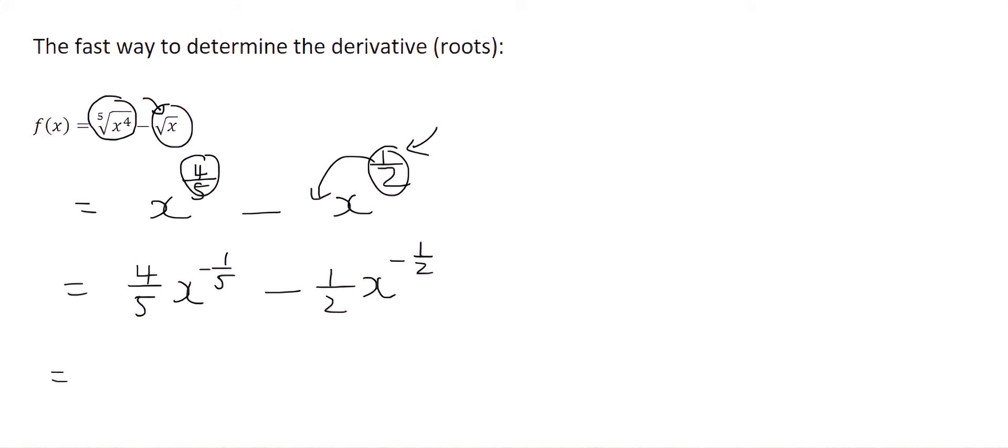Then I just check that there's no negative exponents. In this case, there are. So I write it as 4 over 5, over x to the 1 fifth, minus 1 over 2, over x to the half. And that's the answer.